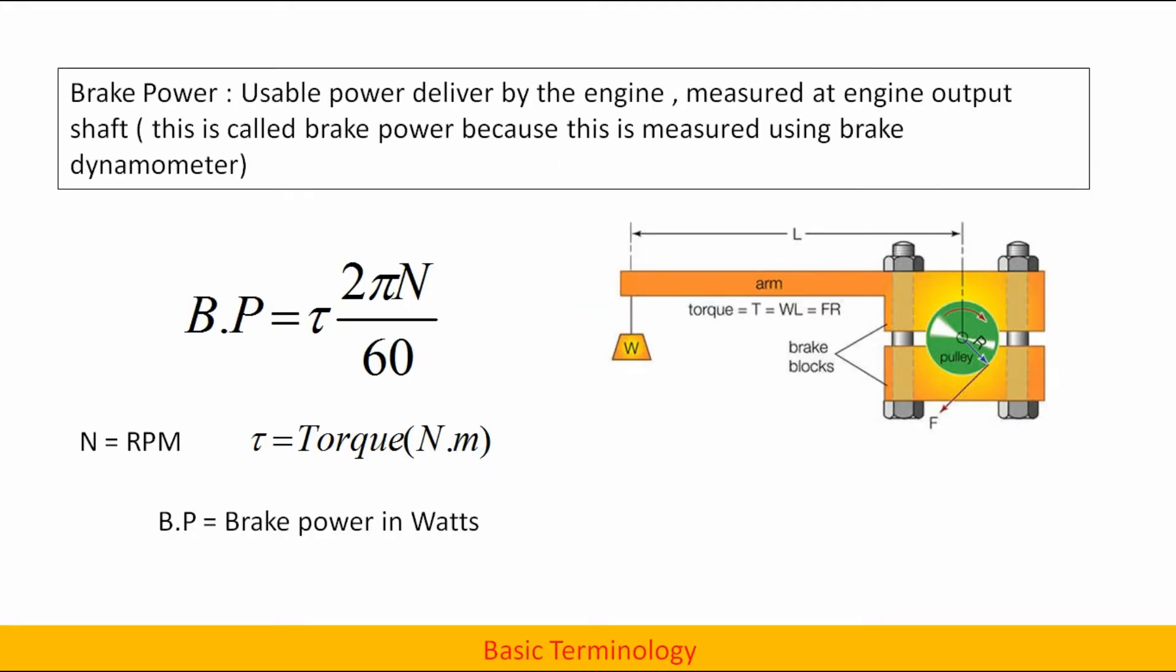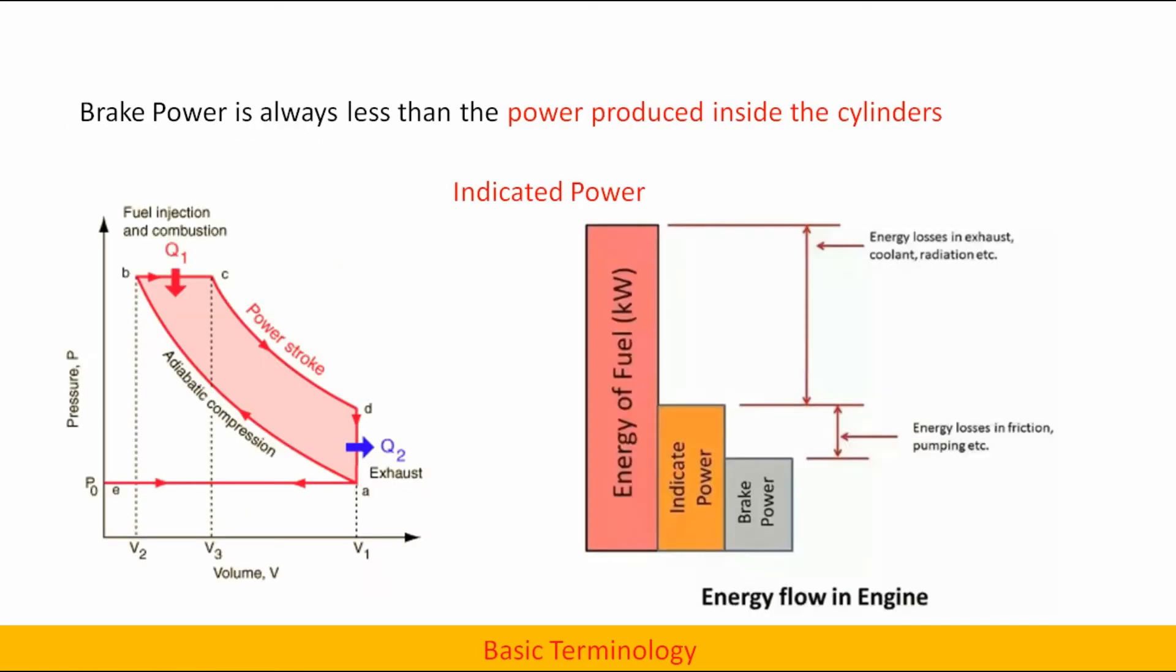Brake power: usable power delivered by the engine measured at the engine output shaft. This is called brake power because this is measured using brake dynamometer. Brake power BP is equal to torque into 2 pi n by 60. Brake power is always less than the power produced inside the cylinders.